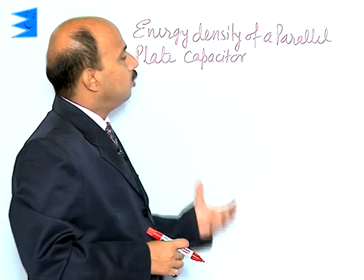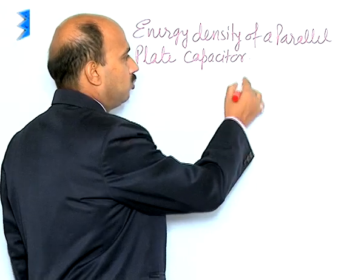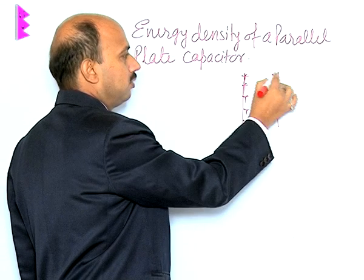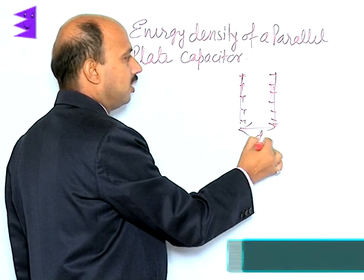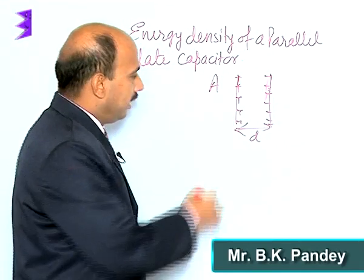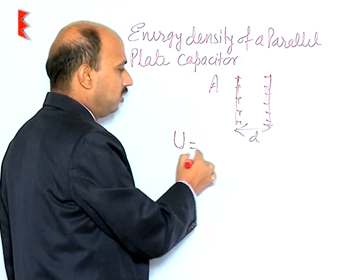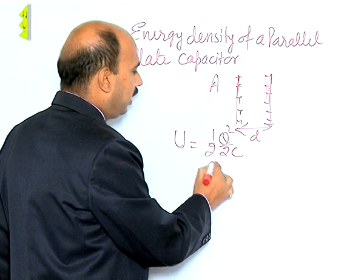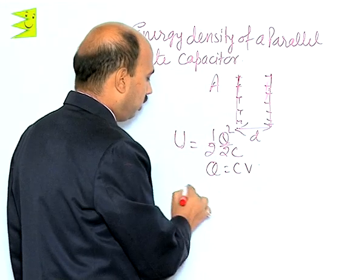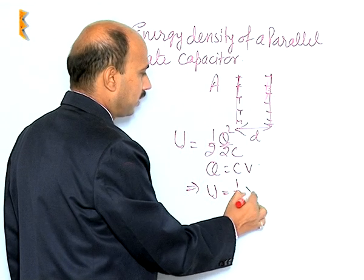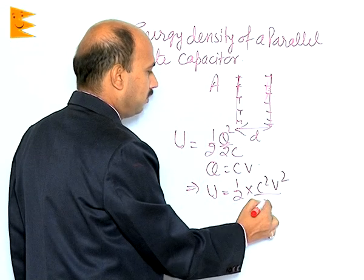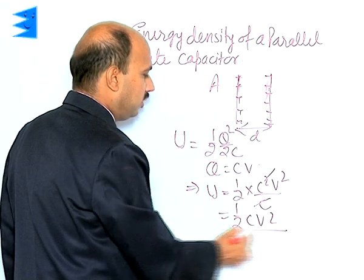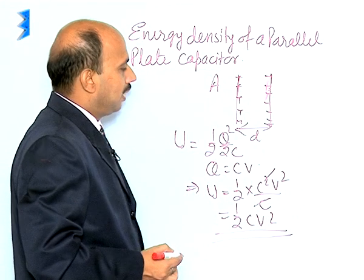Now, see energy density of a parallel plate capacitor. We have a parallel plate capacitor with negative side, distance d, and area of plate a. Energy stored is U = q²/2C, just as we have derived. We can write q = C·V, so we get U = ½C²V²/C, which gives us U = ½CV². This is the formula for energy stored in a parallel plate capacitor.